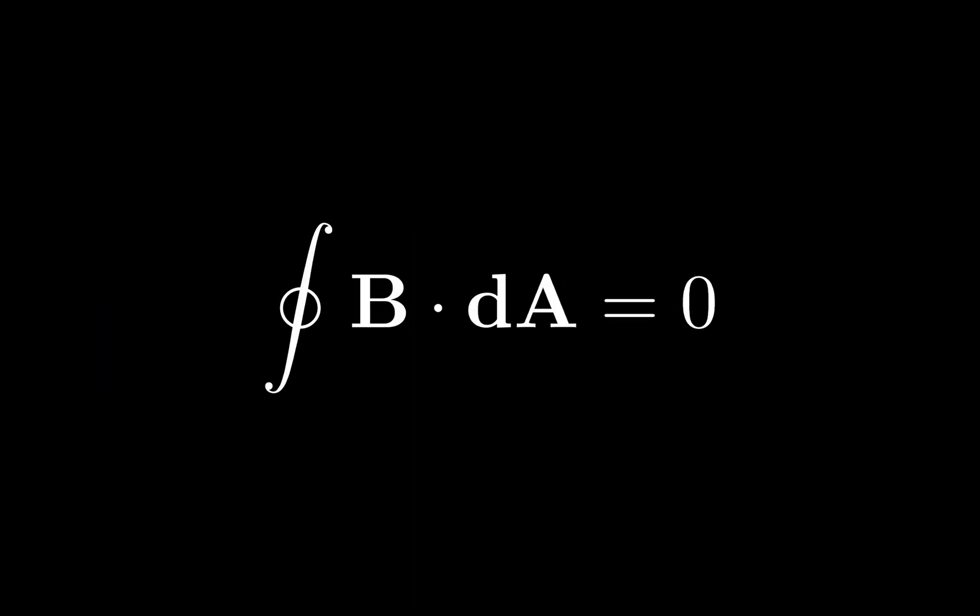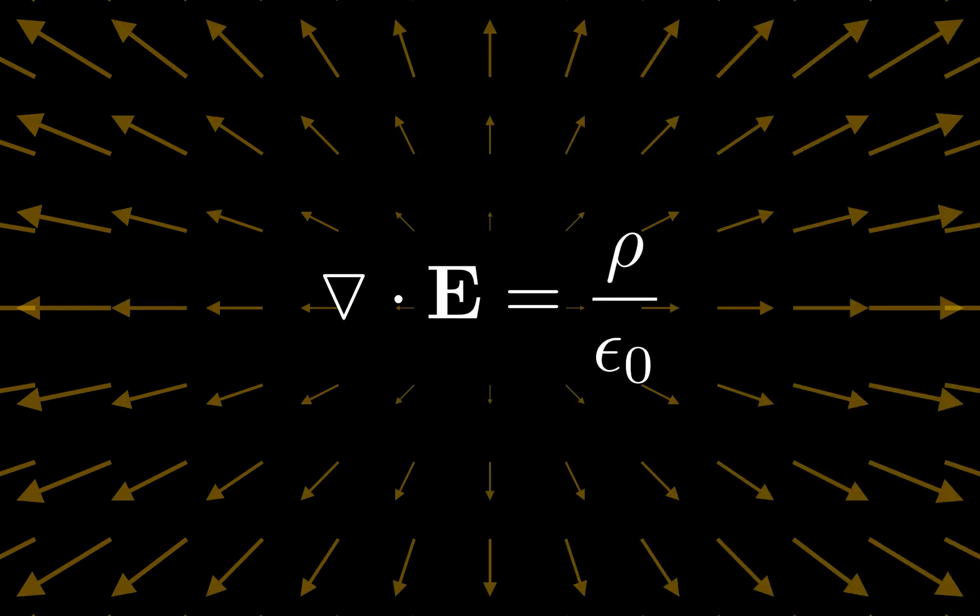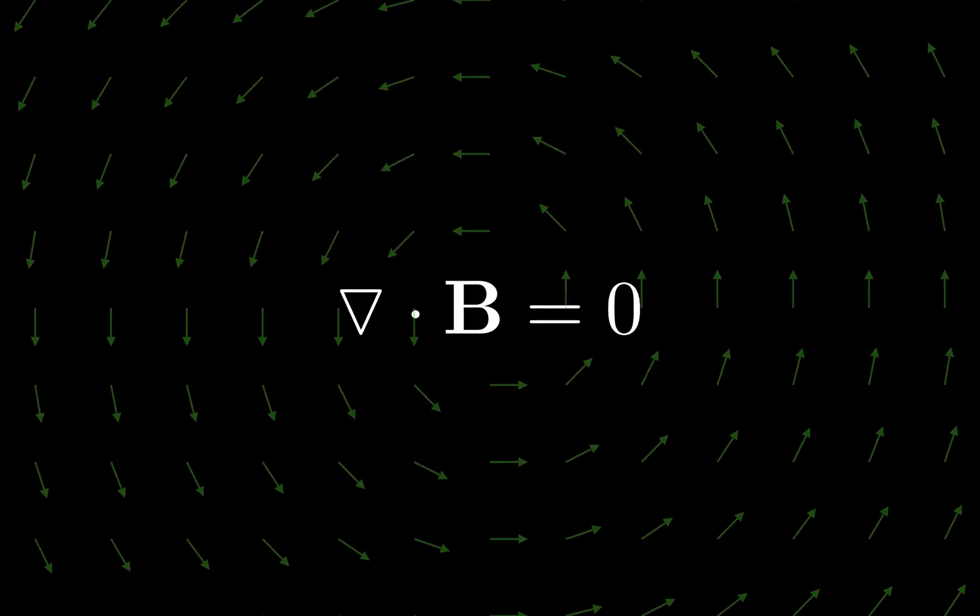While the integral form tells us a lot about the properties of magnetic fields, the differential form of Gauss's law for magnetism tells us a lot more about what to expect from the geometry of magnetic fields. The differential form says that the divergence of a magnetic field is always zero. You will remember from the last video or from your own studies that divergence tells us the radiation of a field from a point. That means that the magnetic field lines don't radiate to or from a point in space. Instead, they circulate along closed paths.